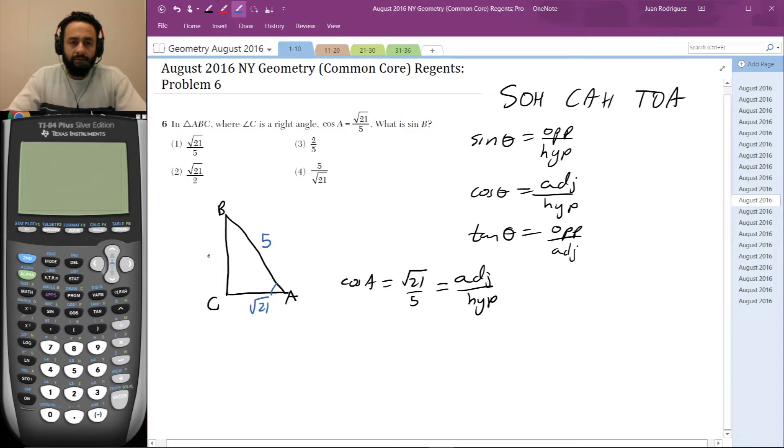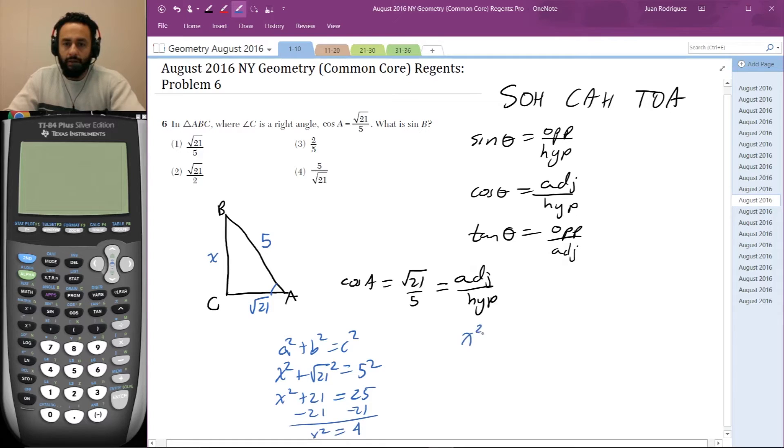Let me find this side using the Pythagorean theorem. So √21² + X² = 5². That's X² + 21 = 25, minus 21, so X² = 4. Taking the square root, X = ±2, but it's a length so X = 2.